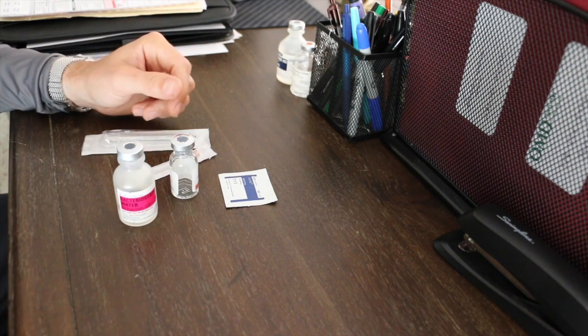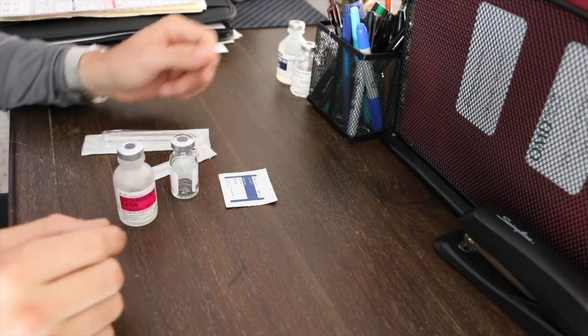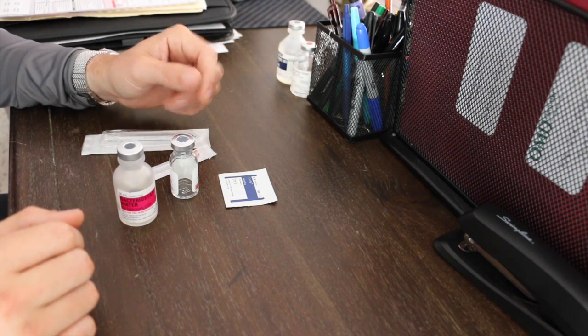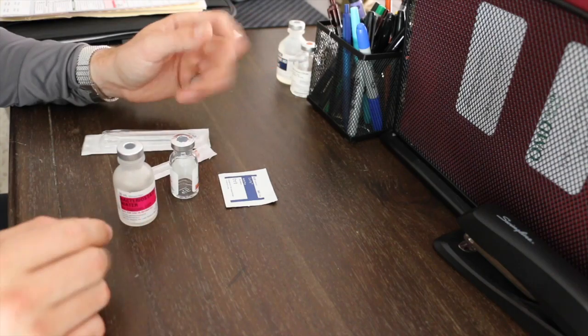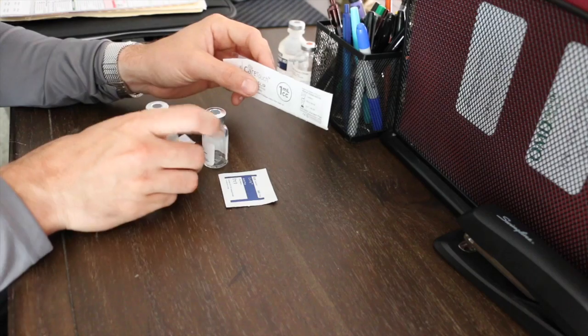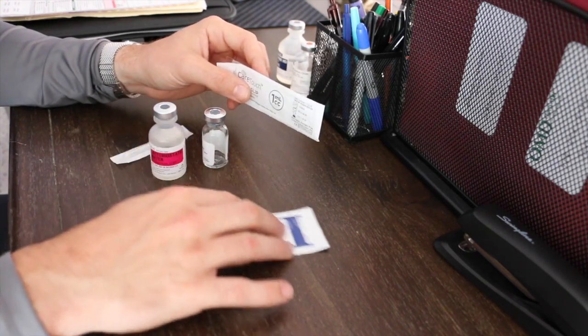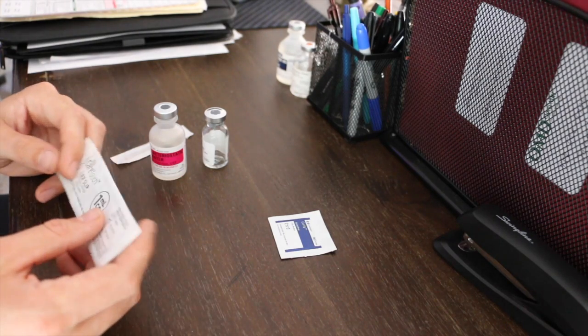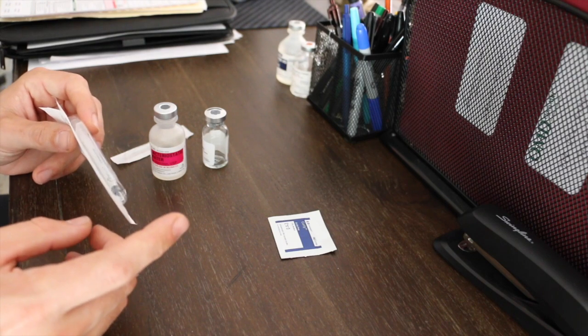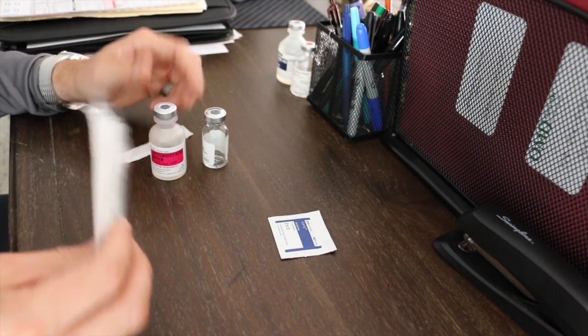Pretty simple. The thing that usually confuses most people is the math. There should be a card in the bag that your pharmacy gave you or an email that tells you the amount of bacteriostatic water or saline you're supposed to use. For this, just imagine that your prescription required one ml or one cc of bacteriostatic water.